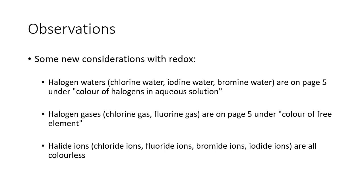Some new considerations with redox: halogen waters. These are halogens dissolved in water — chlorine water, iodine water, and bromine water are on page five under 'colors of halogens in aqueous solutions.' Halogen gases like chlorine and fluorine are also on page five under 'colors of free elements.' Halide ions are all colorless. Be aware that chlorine water is not the same color as chlorine gas, nor is iodine water the same color as iodine. You'll also see a table for halogens in organic solvents, which we'll cover more in organics.